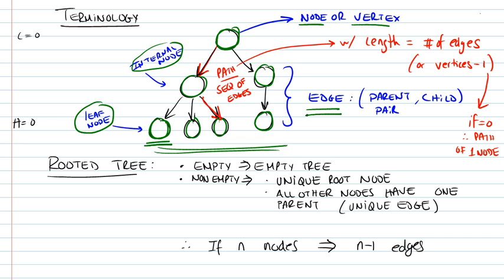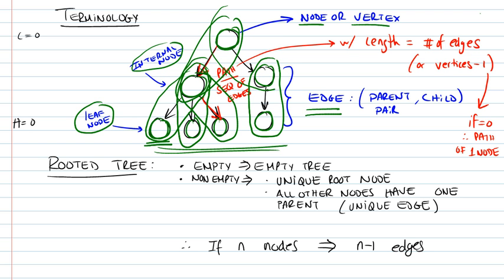Then we also define edges. What is an edge? An edge is a parent-child pair. So any parent-child pair that you can find here would be one edge. So this is an edge, that is an edge, that's another edge, and that would be an edge, and that one too.